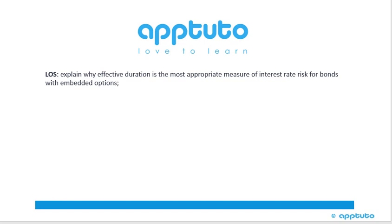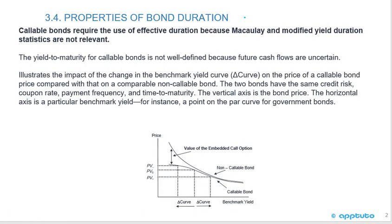This LOS has explained why effective duration is the most appropriate measure of interest rate risk for bonds with embedded options. Properties of bond duration: callable bonds require the use of effective duration because Macaulay and modified yield duration statistics are not relevant.